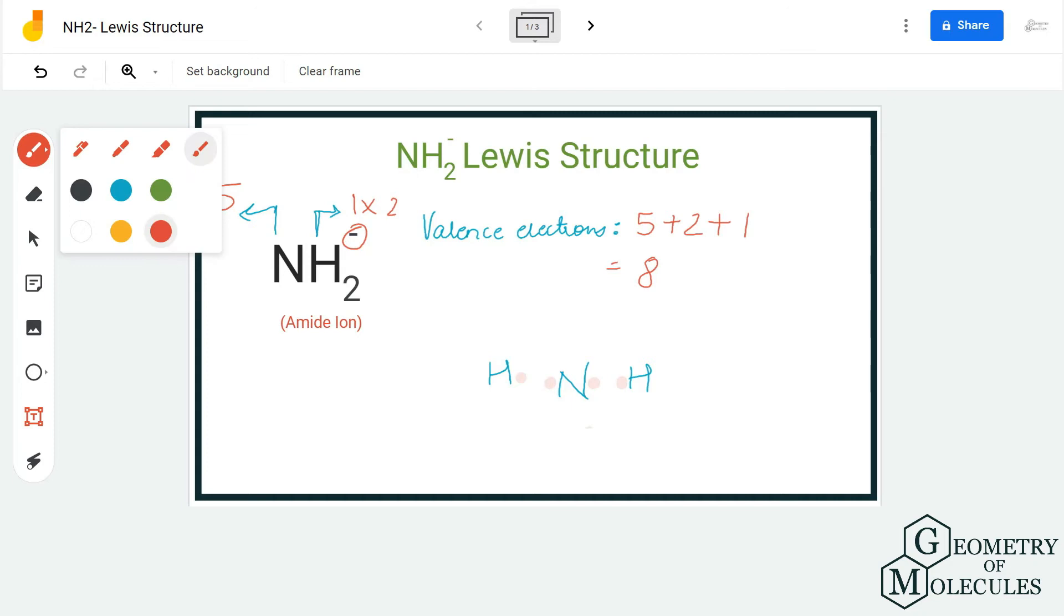We place these four electrons around nitrogen and check if the octets are complete for both nitrogen and hydrogen. As you can see, nitrogen has eight valence electrons in its outer shell completing its octet, and hydrogen has two in its outer shell, which means it has attained a stable structure.